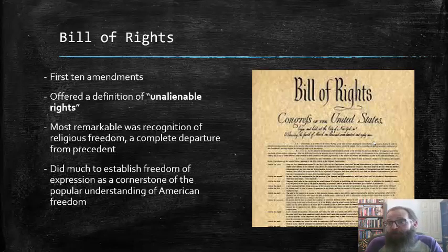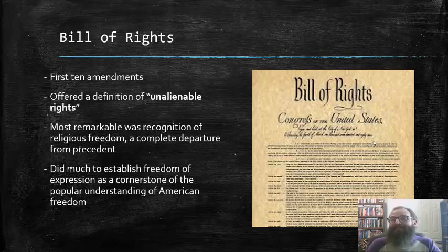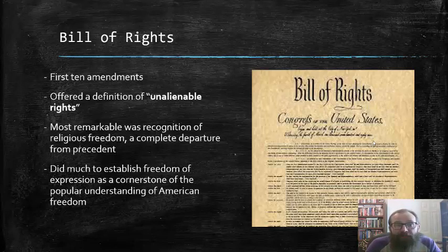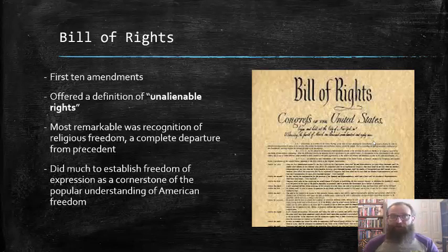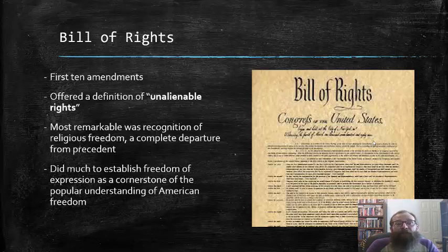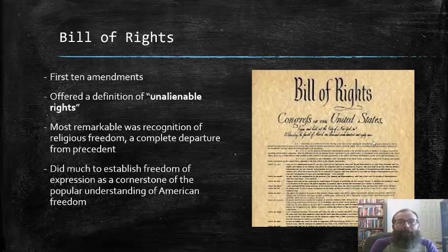So, in efforts to reach another compromise and get the Constitution ratified in all of the states, the Federalists did acquiesce and agree to accept a Bill of Rights as an addendum to the Constitution in order to get it ratified. What has become known as the Bill of Rights essentially comprised the first ten amendments of the Constitution. Many more than that were actually proposed, but they finally settled on ten as the core of what became known as the Bill of Rights — and these ten amendments offered a definition of unalienable rights, the idea of those negative liberties that could not be infringed upon by the government.